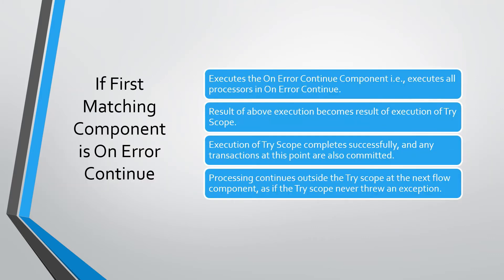If the first matching component is an on-error continue component, Mule executes all the processors inside it. The result of this execution becomes the result of the Try Scope execution. The Try Scope completes successfully, any transactions are committed, and in the flow, Mule starts executing the next component after Try Scope as normal, as if the Try Scope never threw an exception.